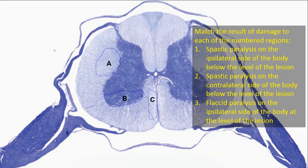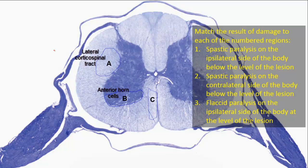Match the result of damage to each numbered region: one — spastic paralysis ipsilateral below the lesion; two — spastic paralysis contralateral below the lesion; three — flaccid paralysis ipsilateral at the level of the lesion. Let's identify the regions: A is the lateral corticospinal tract, located in the depth of the lateral funiculus. B is the anterior horn of gray matter containing alpha motor neurons (lower motor neurons). C is the anterior or ventral corticospinal tract.